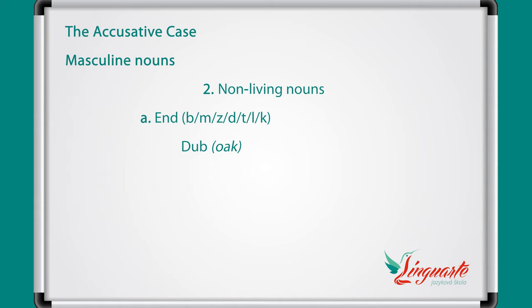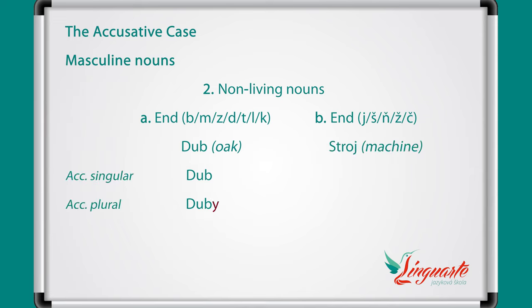There are also nouns ending with a soft consonant — these are nouns ending with j, š, n, ž, č. One example is stroj (machine). The accusative case for dub is dub for singular and duby for plural. Stroj for singular and stroje for plural.